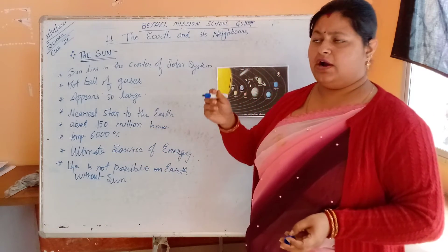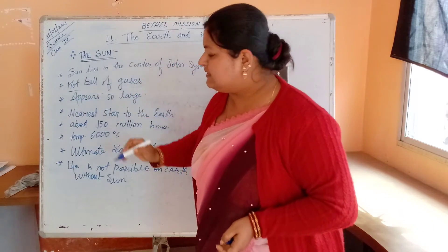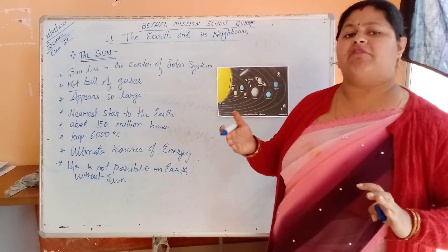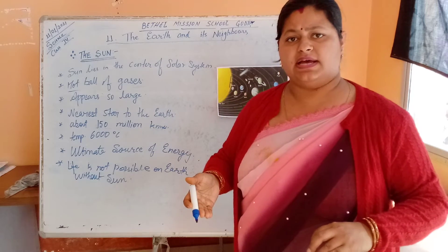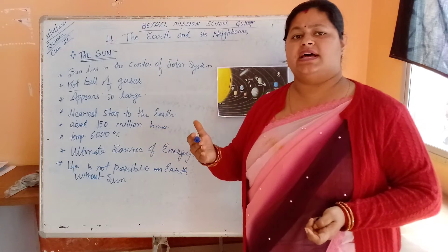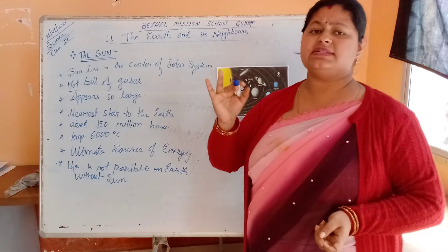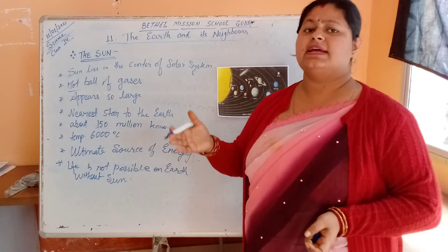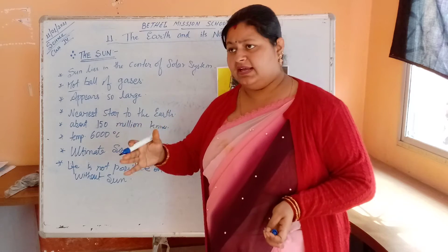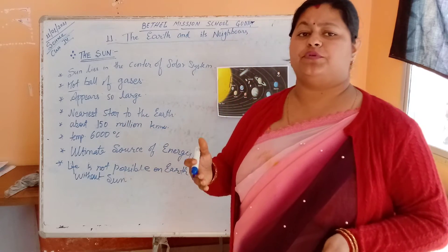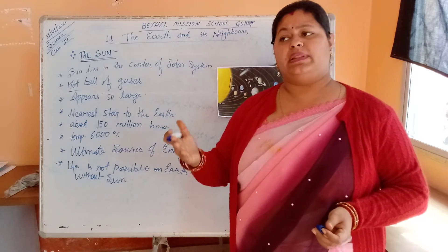Sun is a hot ball — a ball of fire. Can you imagine the temperature on the sun? The temperature of the sun is about 6000 degrees Celsius. Sun is the ultimate source of energy. Sun provides us heat and light, and we cannot imagine our life without the sun.